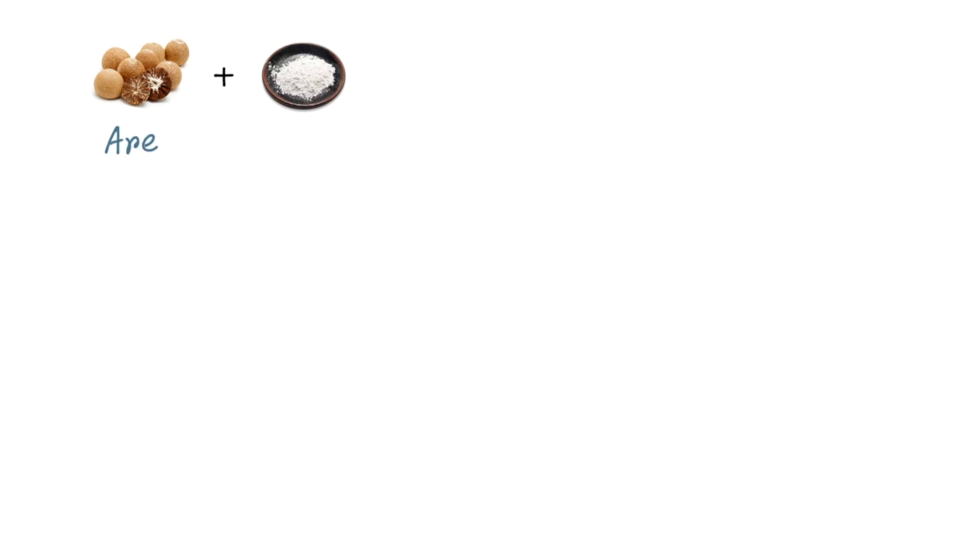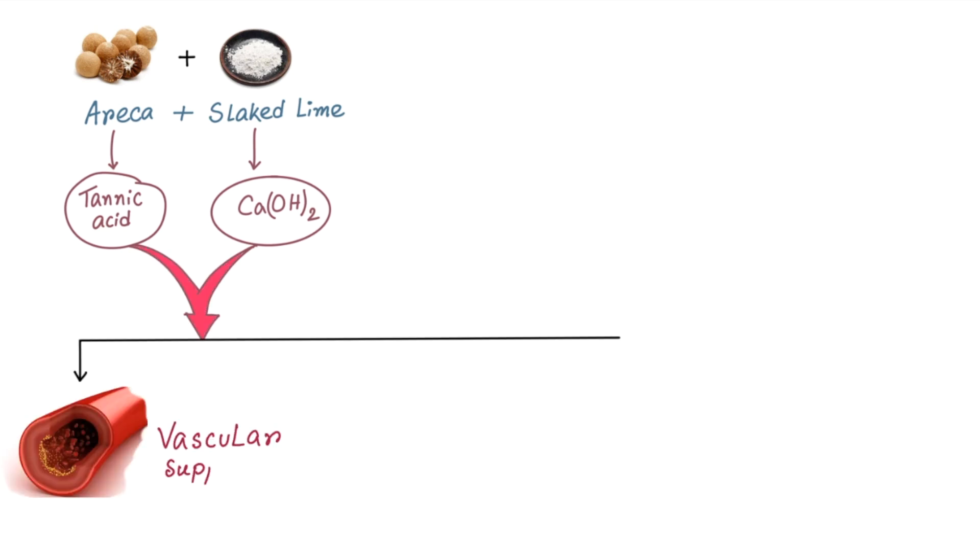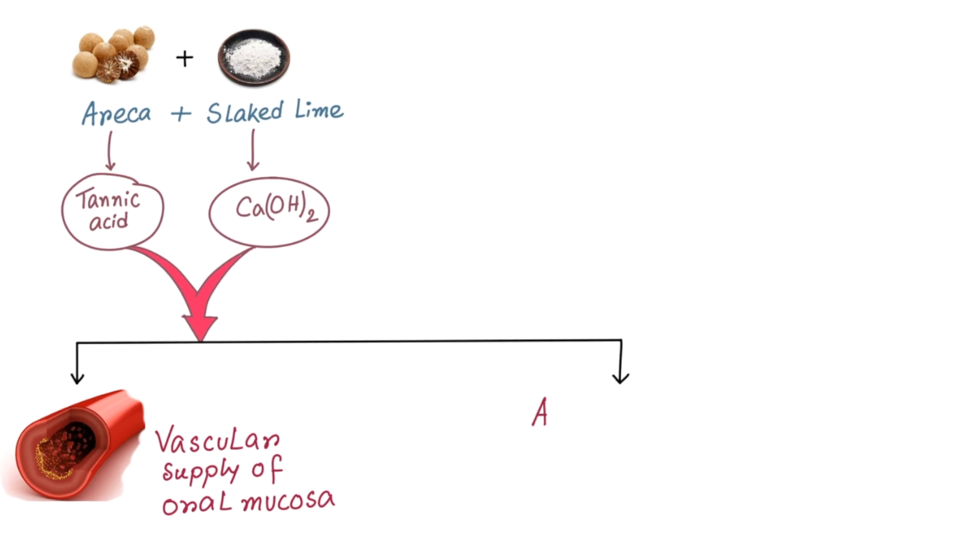Betel nut chewers commonly use arecanut and slake lime mixture. In a habitual chewer, oral submucous fibrosis may be caused by the amount of tannic acid contained in the betel nut. This mixture of tannic acid and calcium hydroxide affects vascular supply of oral mucosa and causes neurotrophic disorder. Addition of calcium hydroxide to arecanut in pan facilitates hydrolysis of arecoline to arecadine which is more potent.